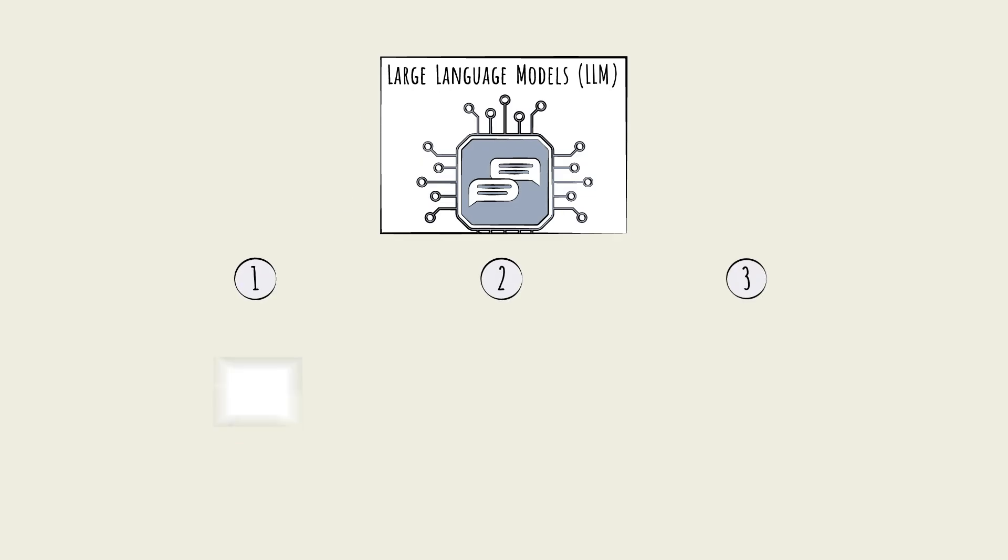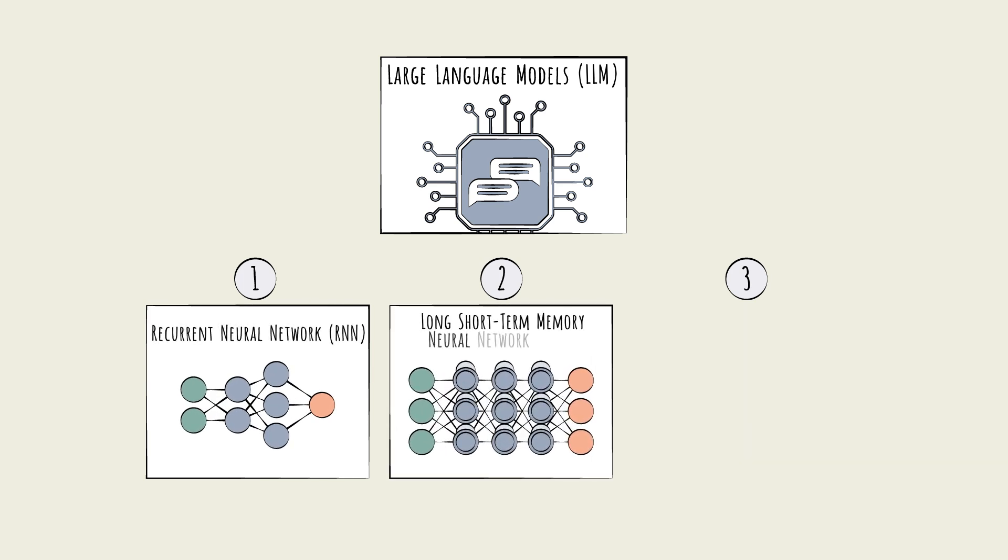We will cover three. The recurrent neural network, or RNN, the long short-term memory neural network, or LSTM, and the transformer.